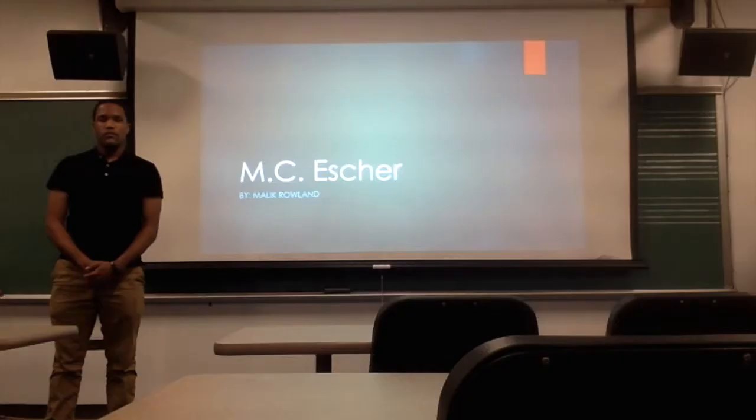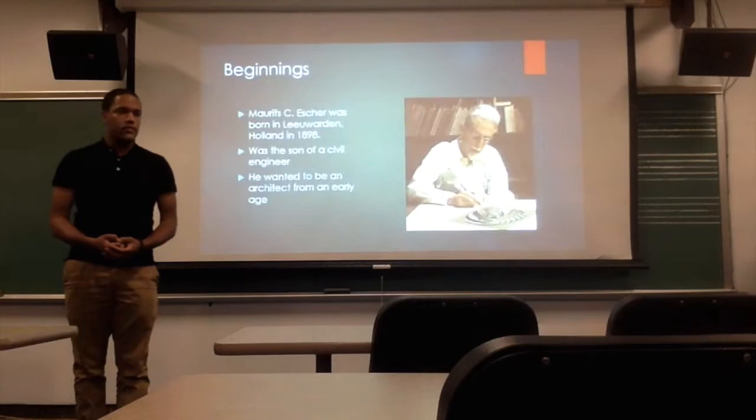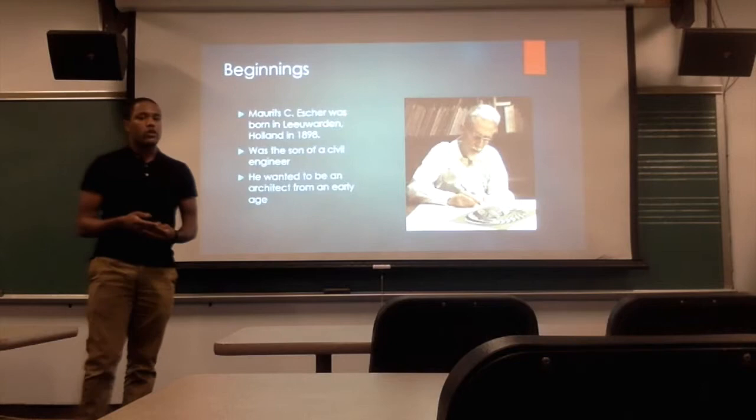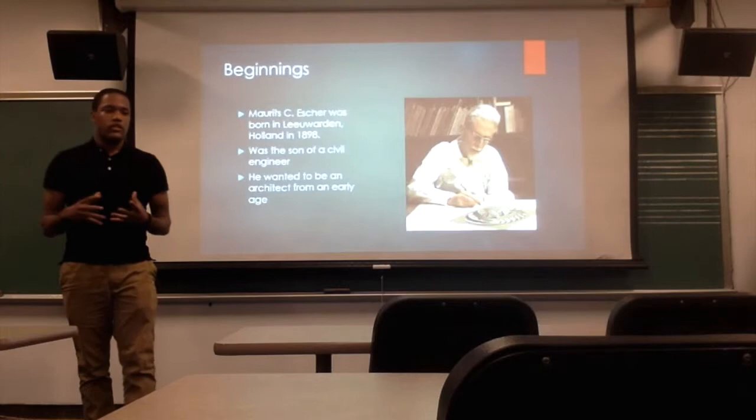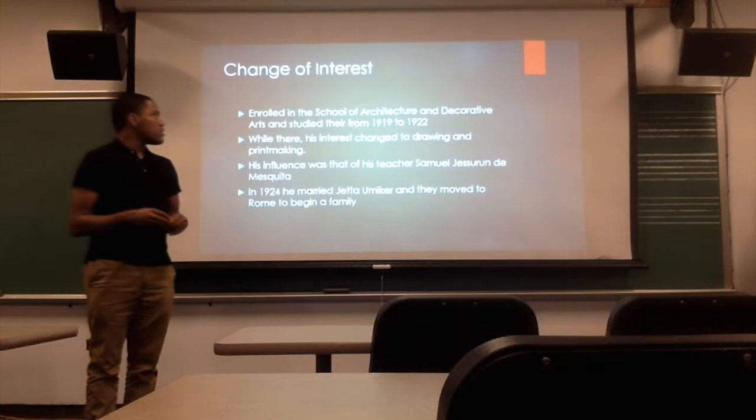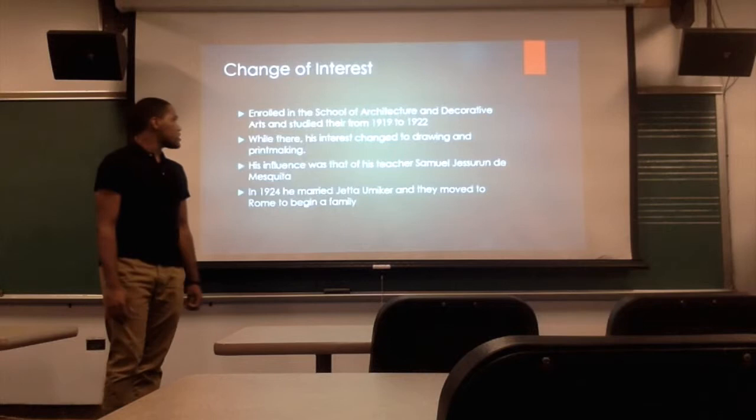The next person we're going to be talking about in our presentation is M.C. Escher. Maurits C. Escher was born in Leeuwarden, Holland in 1898. He was the son of a civil engineer, and from an early age it was clear that Maurits had a big interest in architecture. Later on in life, he enrolled in the school of architecture and decorative arts and studied there from 1919 to 1922.